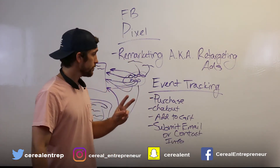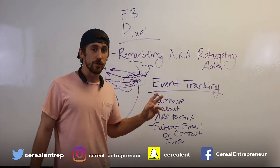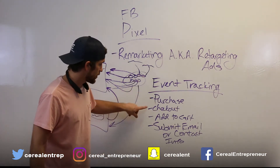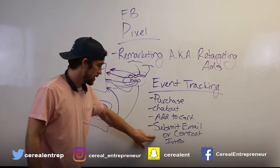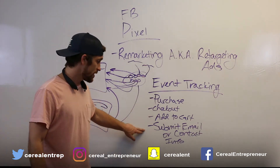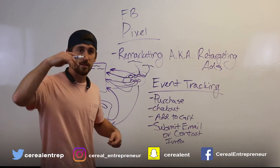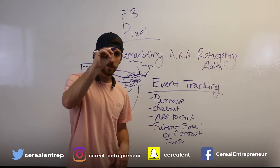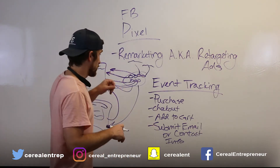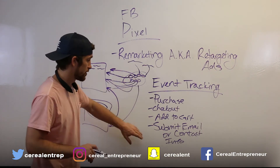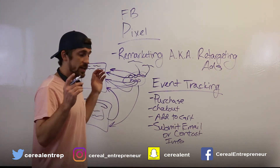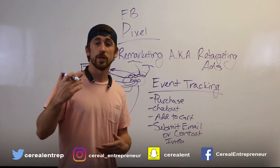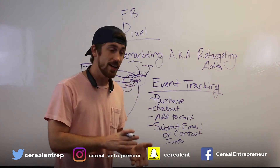Number two: you can create audiences from this traffic. If someone visits your website and submits their contact information, you can take that list of people, submit it to your Facebook Business Manager, and create an audience out of them. Facebook will sort through and identify which of those people have Facebook accounts - these are qualified, interested leads.